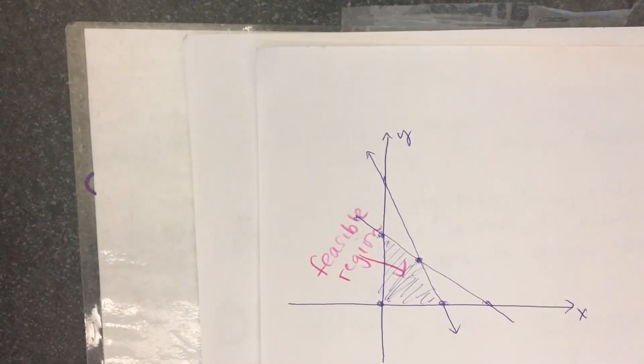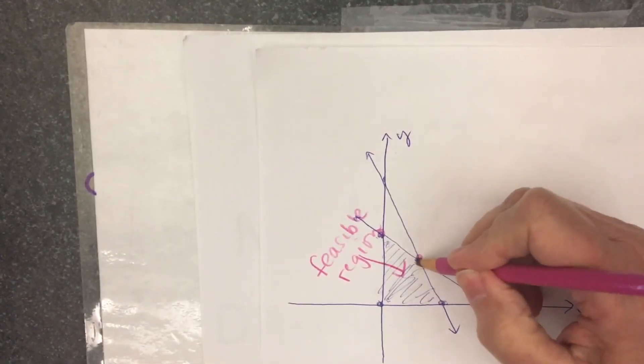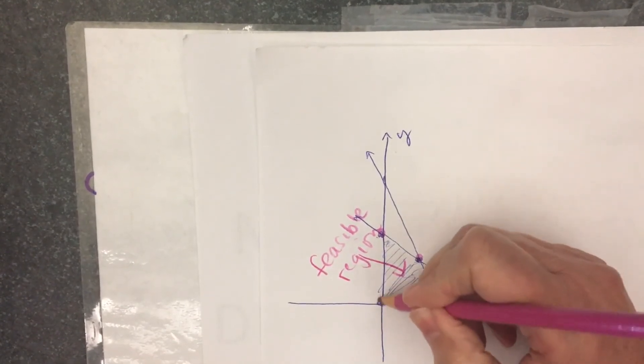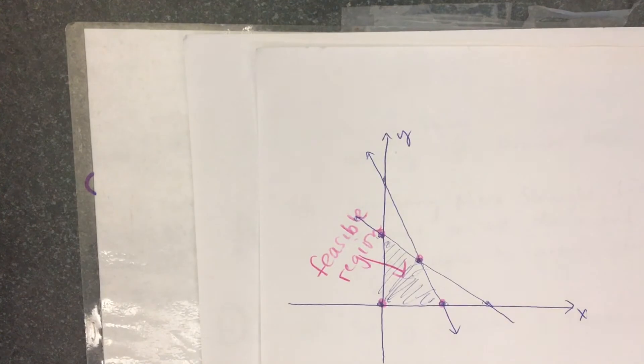And for the problems in 7.5, you're going to have to find the corner points of the feasible region. Now, two of those corner points are intercepts.